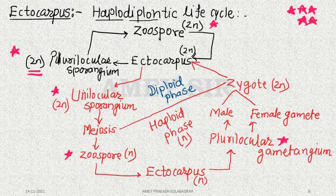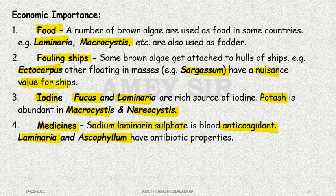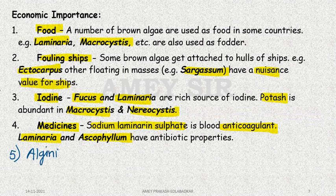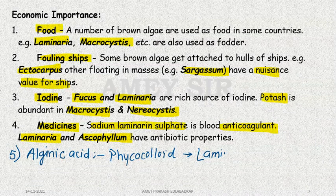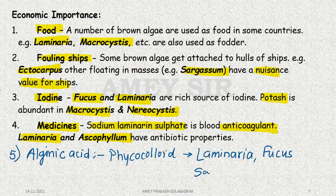There is one small but important part to add here: alginic acid, which is a phycocolloid. It is obtained from Laminaria, Sargassum, and Fucus. These 2-3 names are very useful. Laminaria, Fucus, and Sargassum are the most frequently encountered sources, and commercial exploitation of alginic acid is done from these.